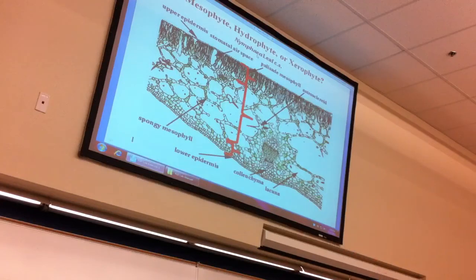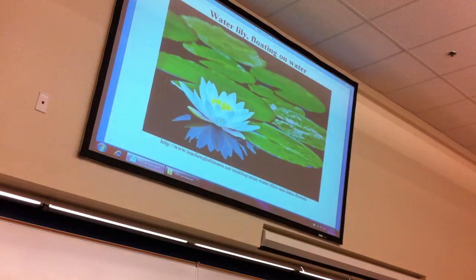All the spongy mesophyll is providing buoyancy - a lot of air, it's going to float. None of that is really helping reduce water loss. If anything, this would have a high rate of moisture loss because the guard cells are in the upper epidermis, not lower. Can you explain why guard cells in the upper epidermis would increase moisture loss?